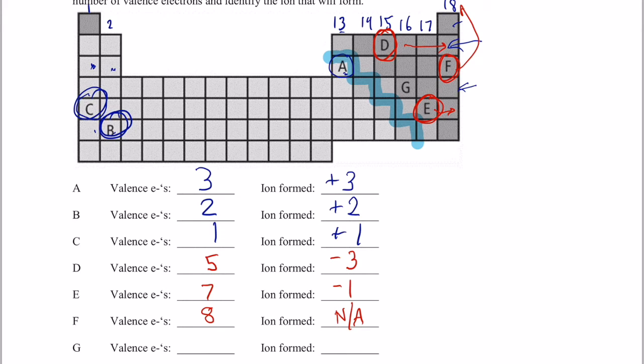And finally, letter G. Another non-metal. It's in group 16. Looks like it's going to gain two electrons to become like the noble gas ahead of it. It has six valence electrons, so it's negative two.